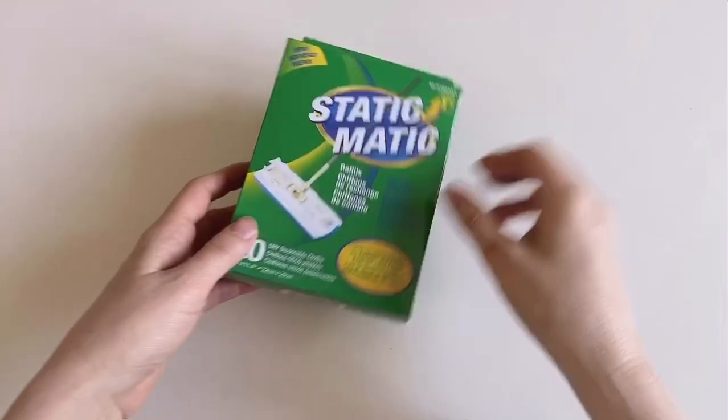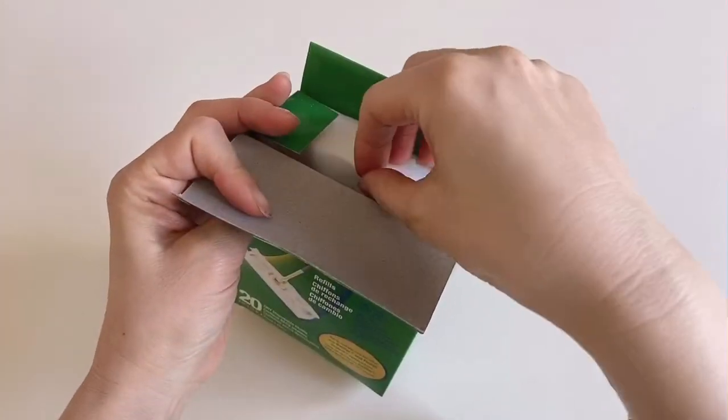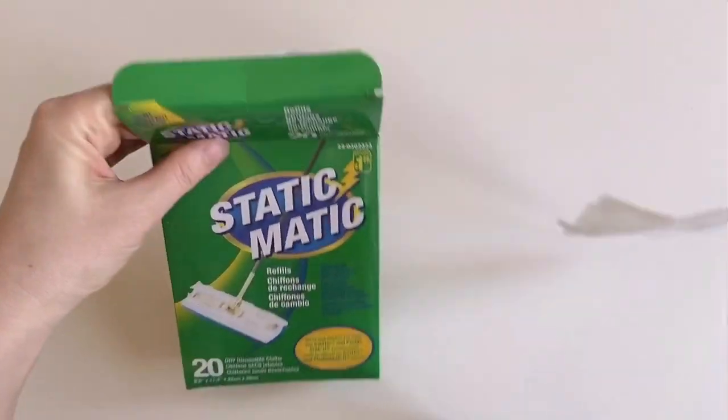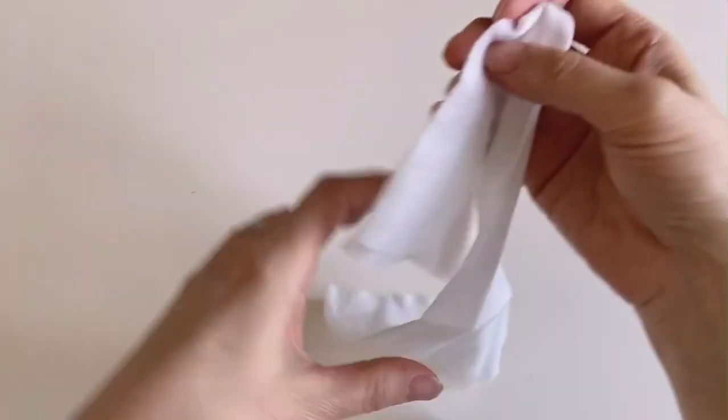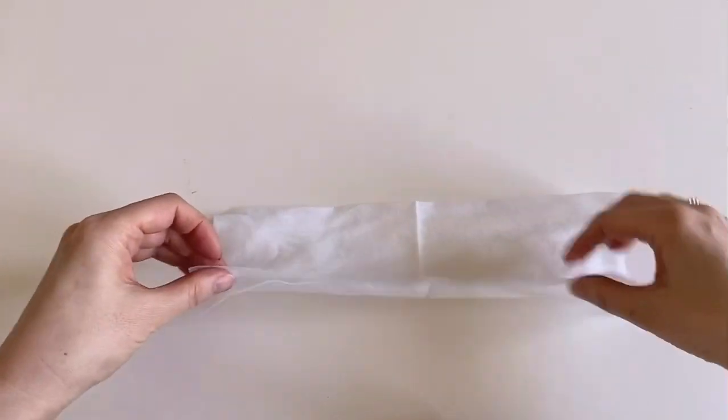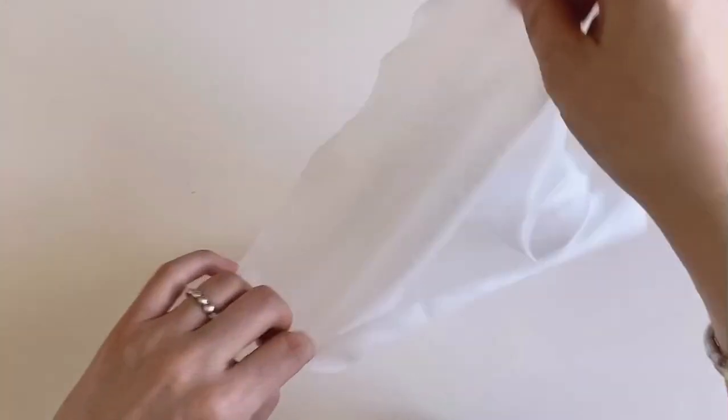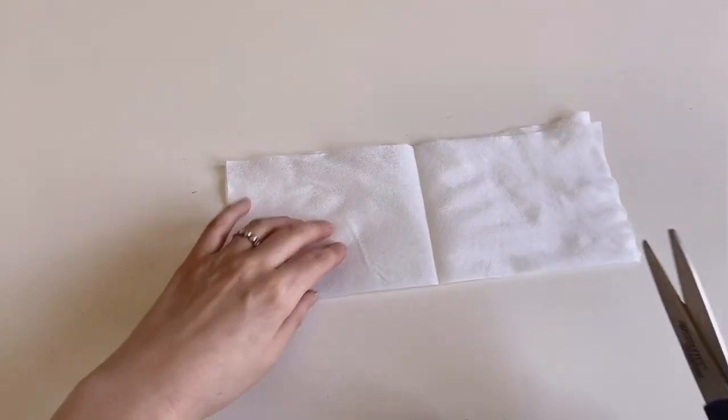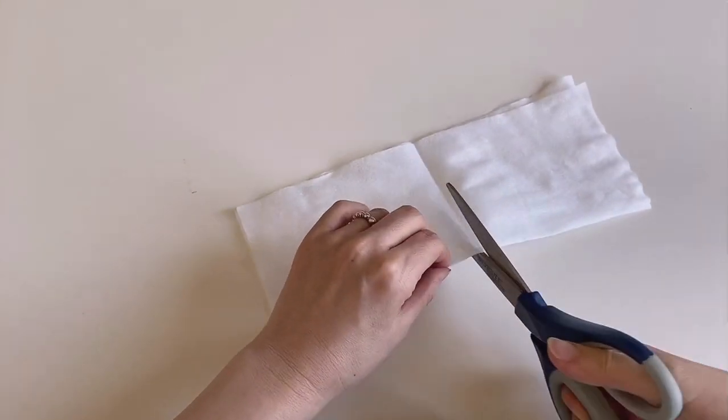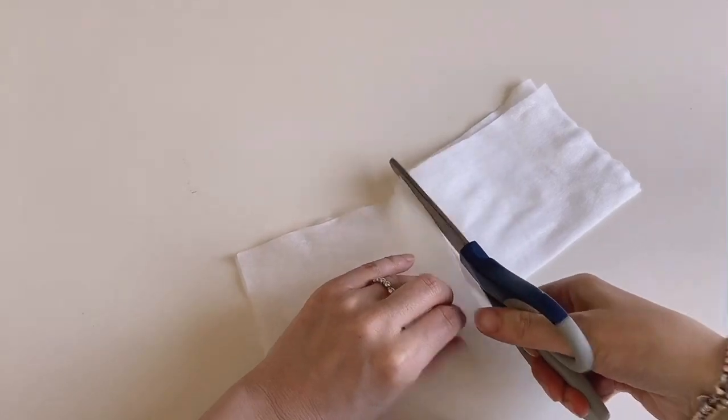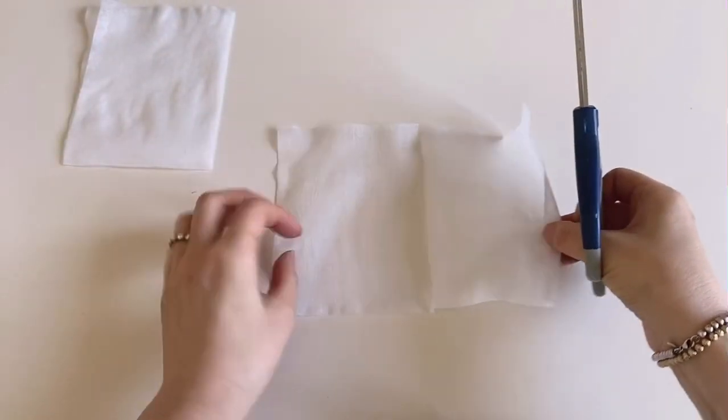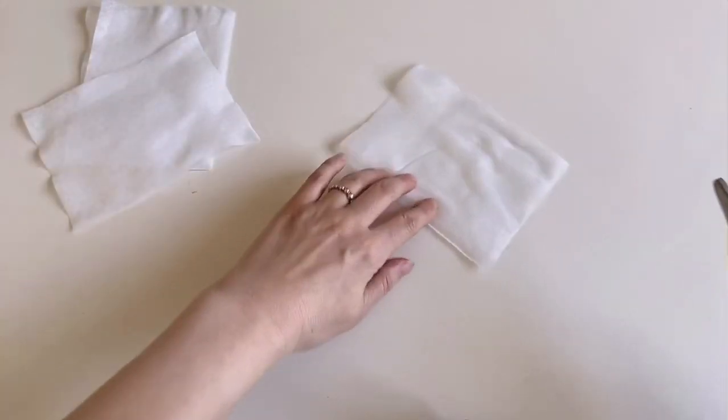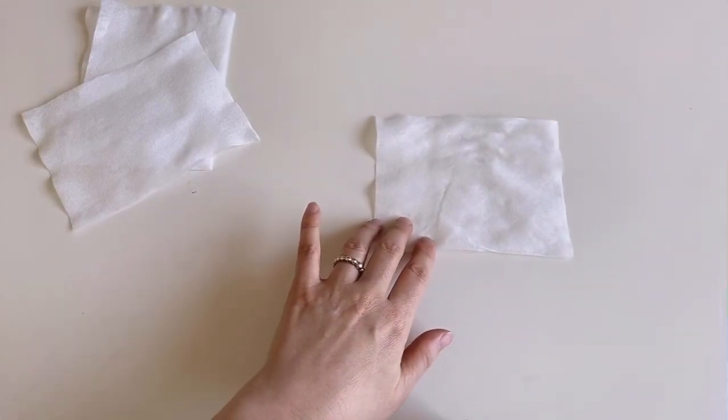Now take out one sweeper cloth from the box. And this is how it looks like. We only need one quarter of it, so cut it into a piece. And this is only what you need for one mask.